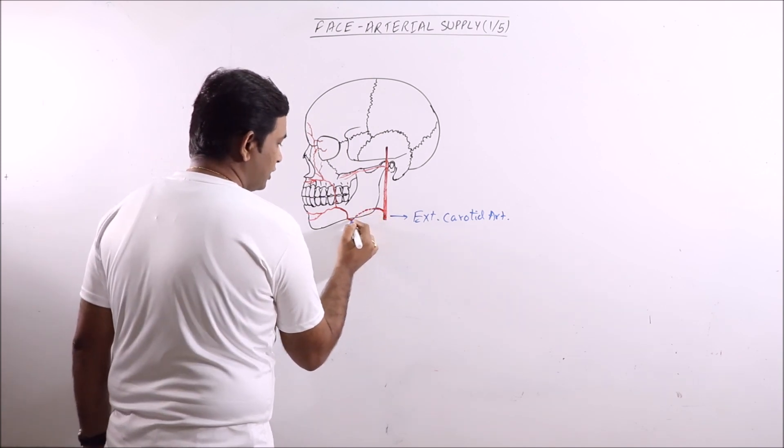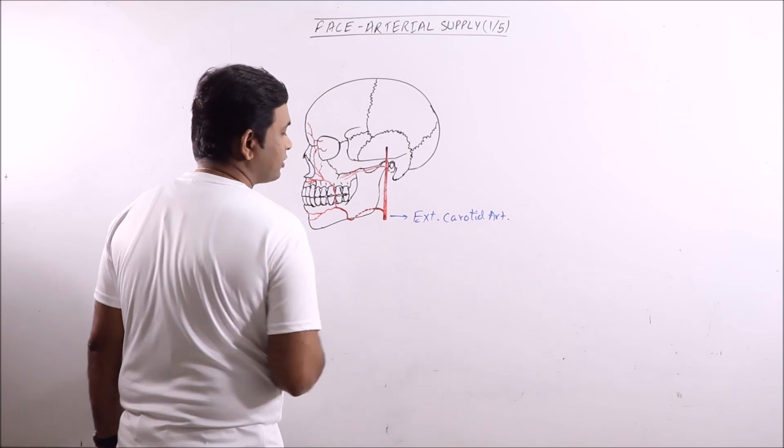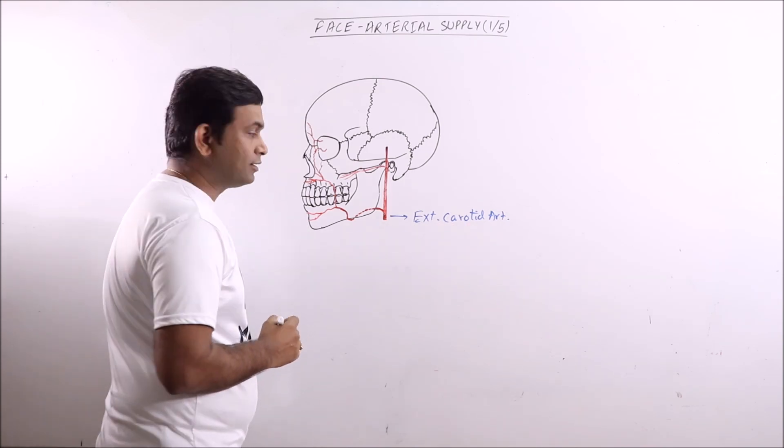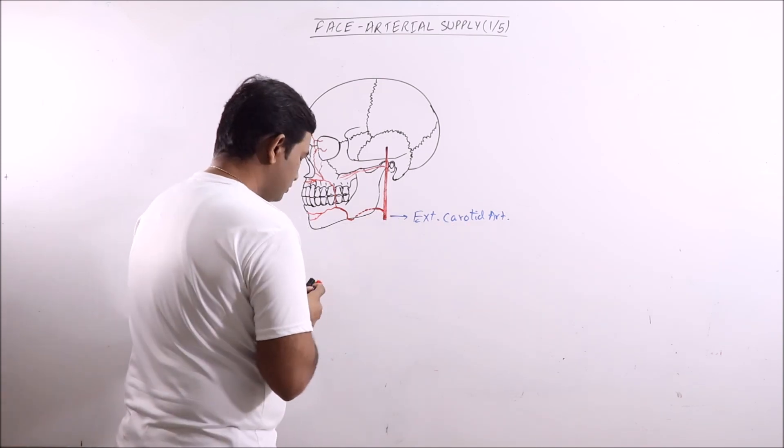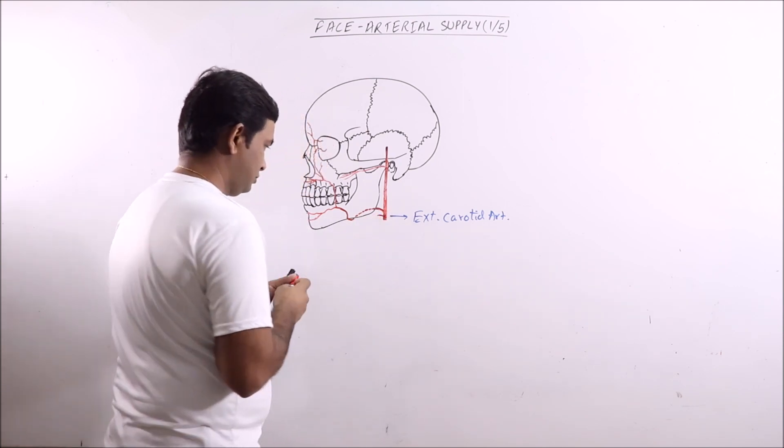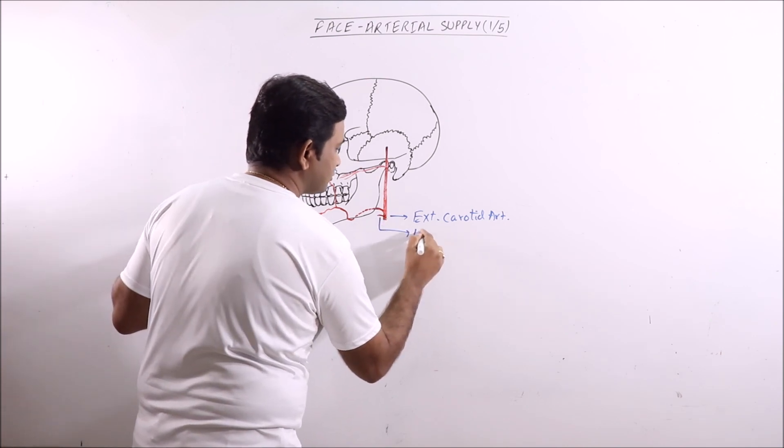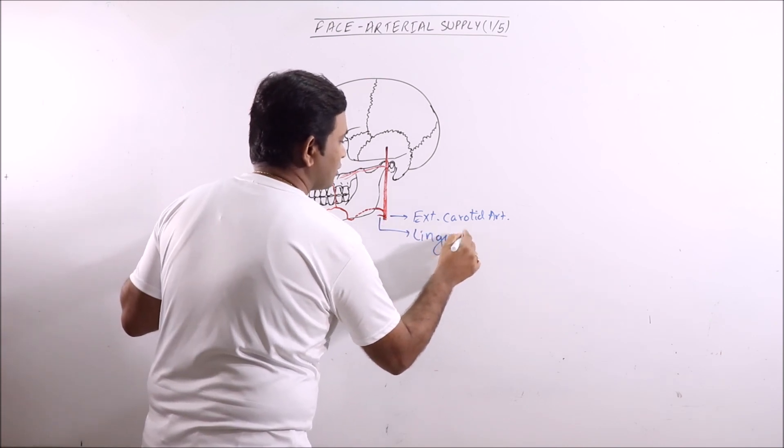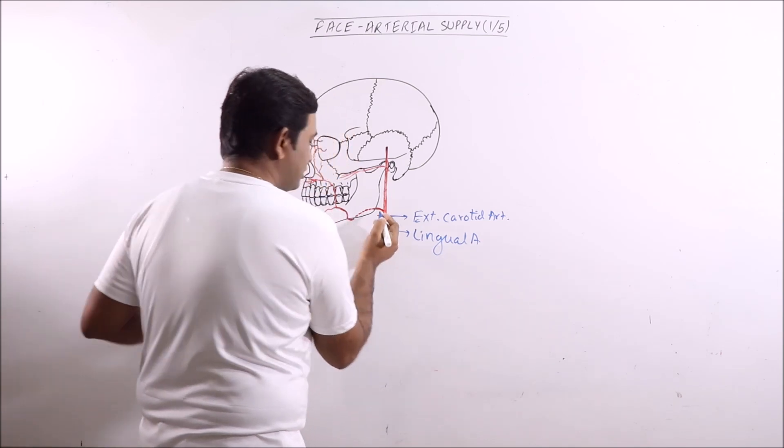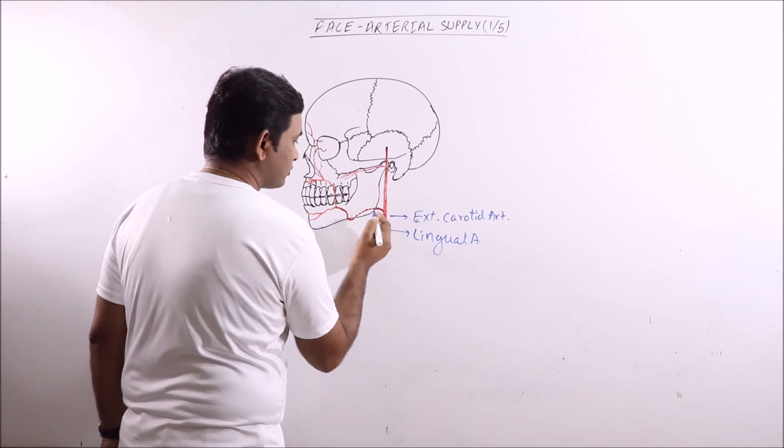This is facial artery. So facial artery originates from the external carotid artery in the carotid triangle, just above the lingual artery. This is lingual artery. And also it is just above the tip of the greater cornua of the hyoid bone.